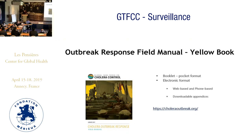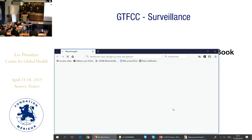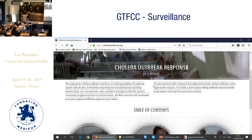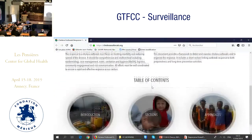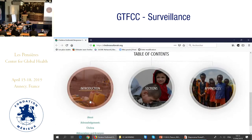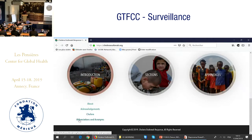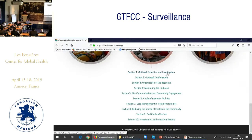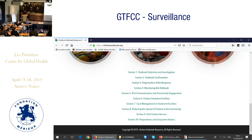It's also available in electronic format through the website and for phone access. I'm going to show you briefly how it's organized. The yellow book has three main areas: introduction, acknowledgements, some information about cholera, and acronyms. Then we have ten technical sections: alert detection, investigation, confirmation, response, monitoring, risk communication and community engagement, cholera treatment centers, case management, WASH in the community, OCV, and preparedness and long-term.